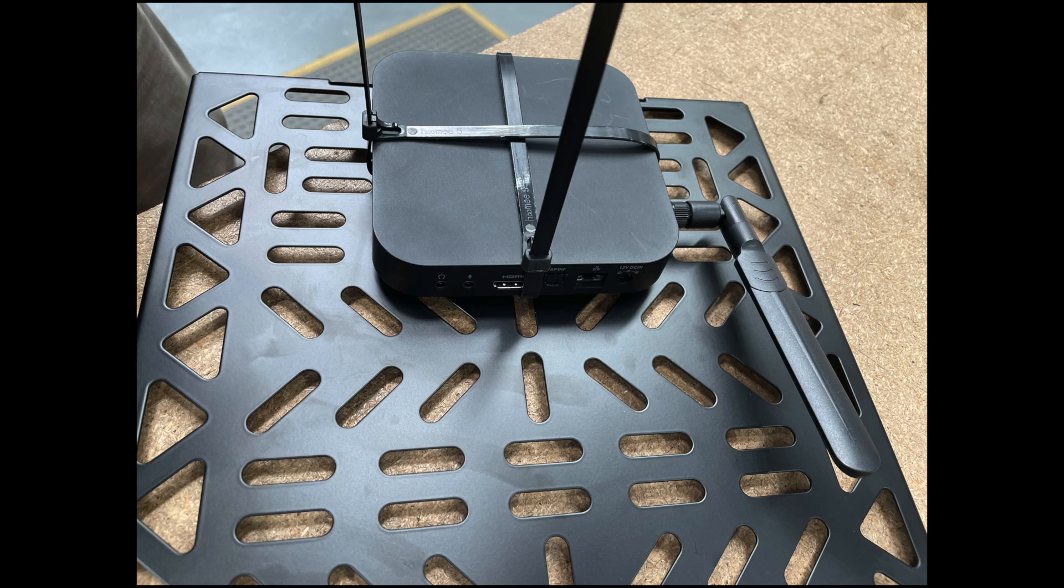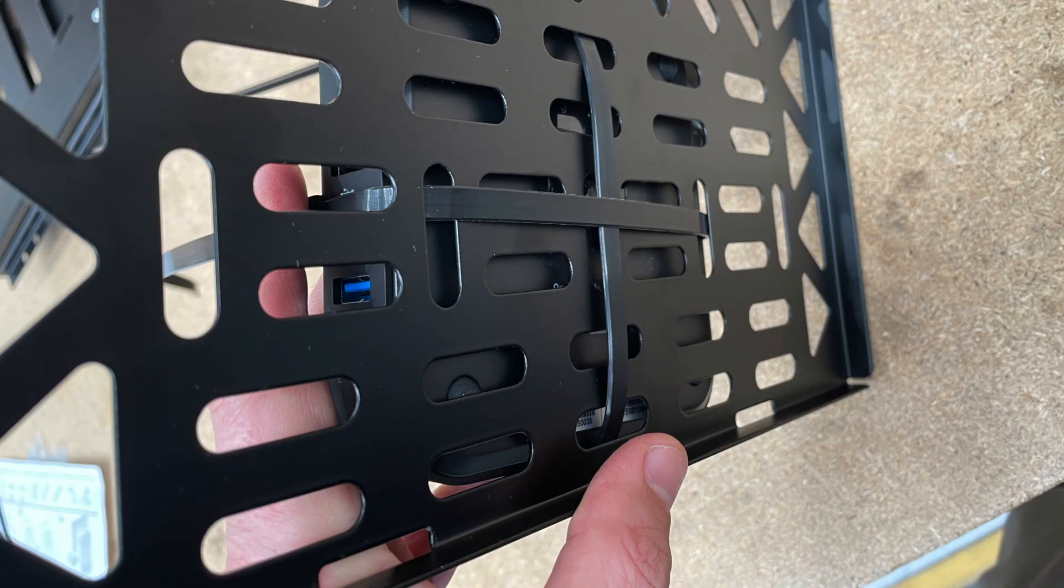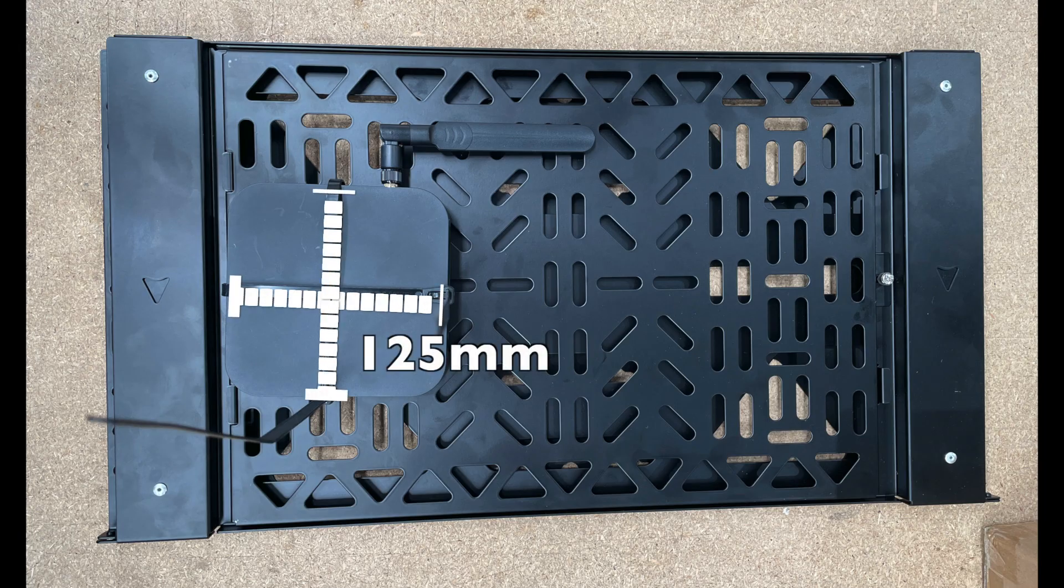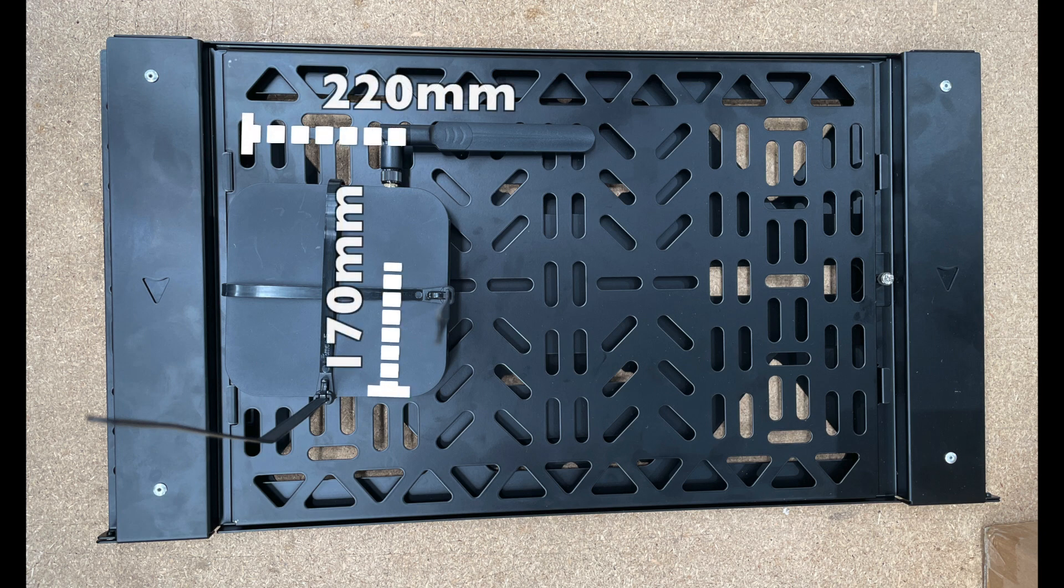Here we fastened a MINIX box to the mounting tray. You'd normally cut off the excess cable tie. The MINIX box is 125mm high and wide. With the antenna it's 220mm by 170mm.